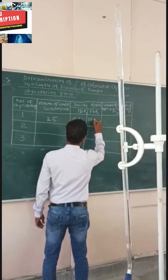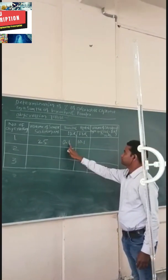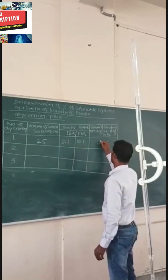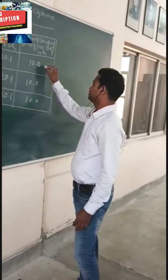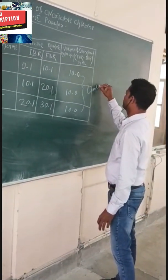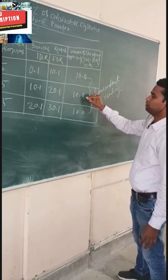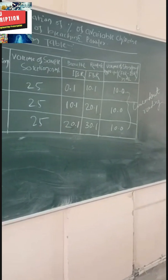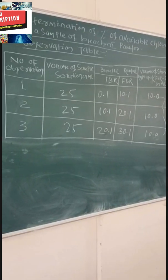The final burette reading is 10.1. Volume of standard hypo solution used = final reading minus initial reading = 10.1 minus 0.1 = 10.0 ml. One reading is completed. I have taken three readings this way. Note the values which will be required for the calculation. Thank you.